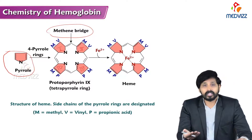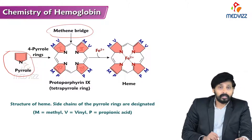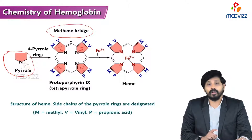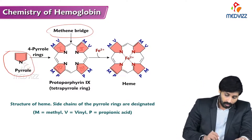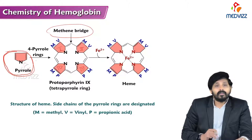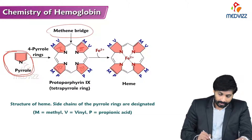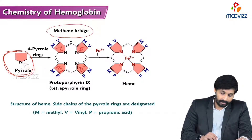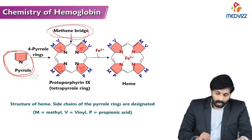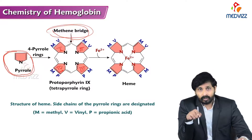Now for the diagrammatic representation: this is the single pyrrole ring, and like this, four pyrrole rings are joined by methane bridges — first, second, third, and fourth — to form the porphyrin ring.